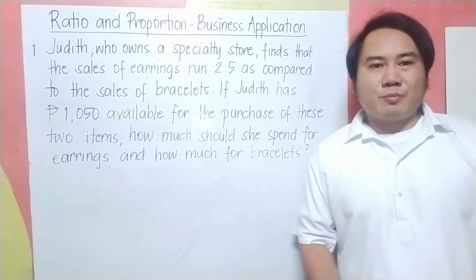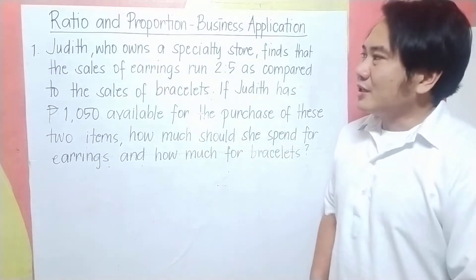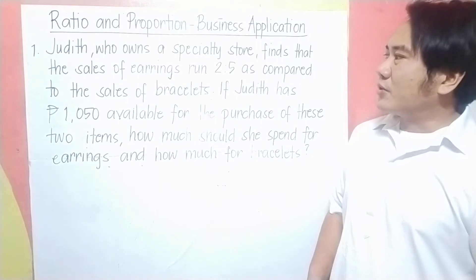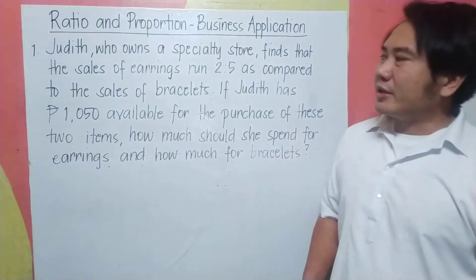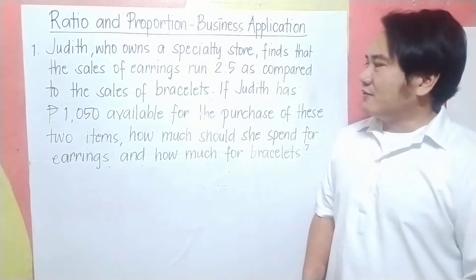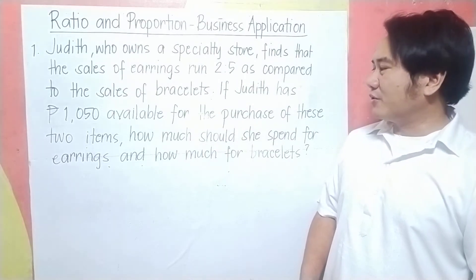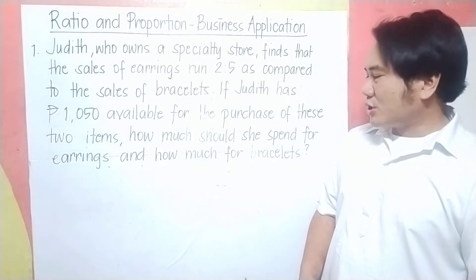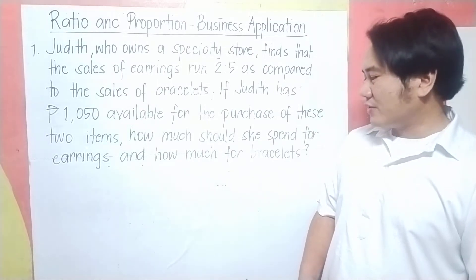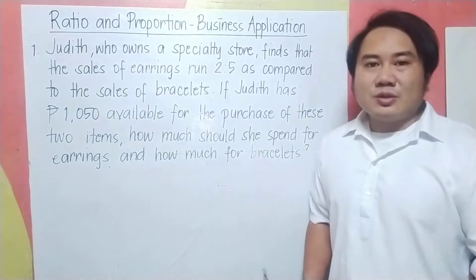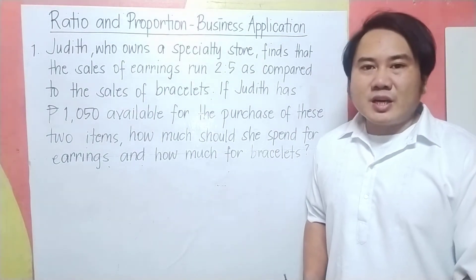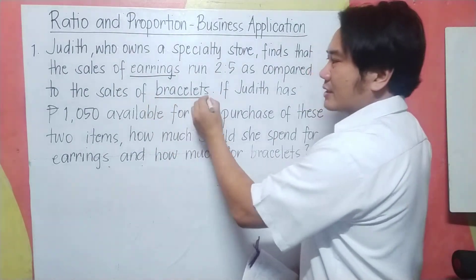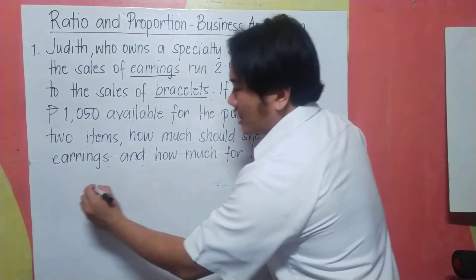Business application of ratio and proportion. Number one: Judith, who owns a specialty store, finds that the sales of earrings run two to five as compared to the sales of bracelets. If Judith has 1,050 available for the purchase of both items, how much should she spend for earrings and how much for the bracelet? The two quantities we are comparing here are the earrings and the bracelet, so our ratio is earrings to bracelet.